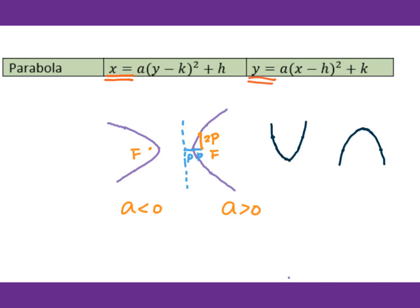For a vertical parabola, when a is greater than 0 it opens up; when a is less than 0 it opens down. The focus is still inside the curve. The distance between focus and vertex is p, and from vertex to directrix is also p. From the focus, if you draw a parallel line to the directrix, the distance will be 2p. The directrix position depends on the orientation of the graph.